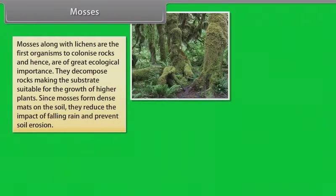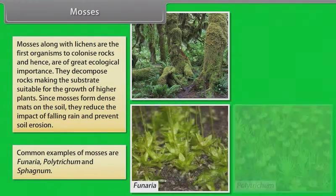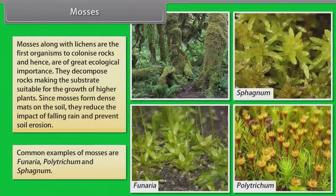Mosses, along with lichens, are the first organisms to colonize rocks and hence are of great ecological importance. They decompose rocks, making the substrate suitable for the growth of higher plants. Since mosses form dense mats on the soil, they reduce the impact of falling rain and prevent soil erosion. Common examples of mosses are Funaria, Polytrichum, and Sphagnum.